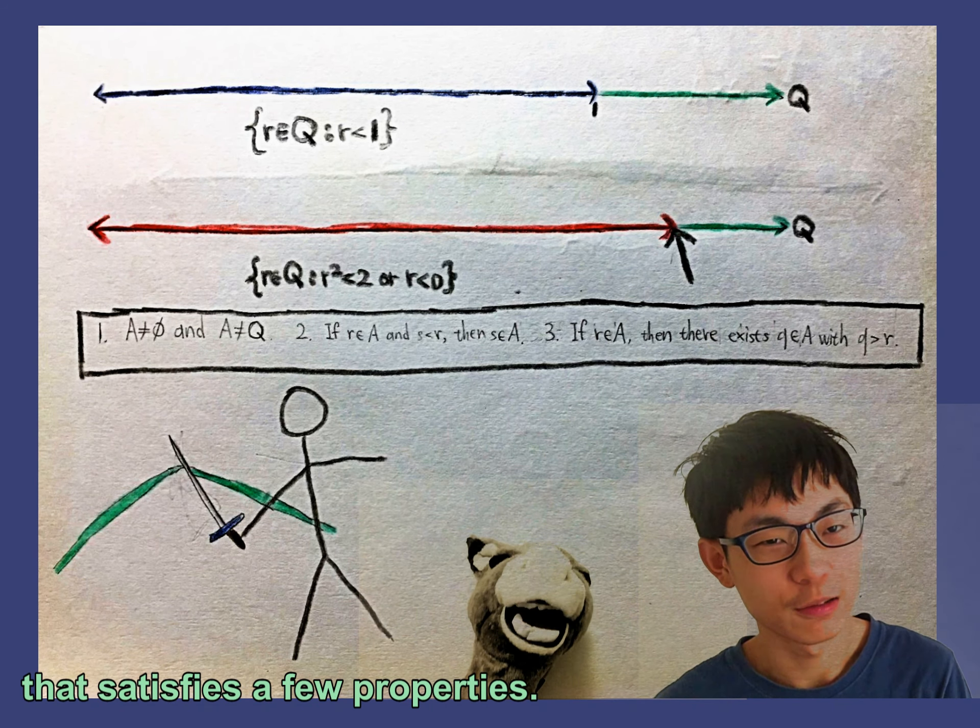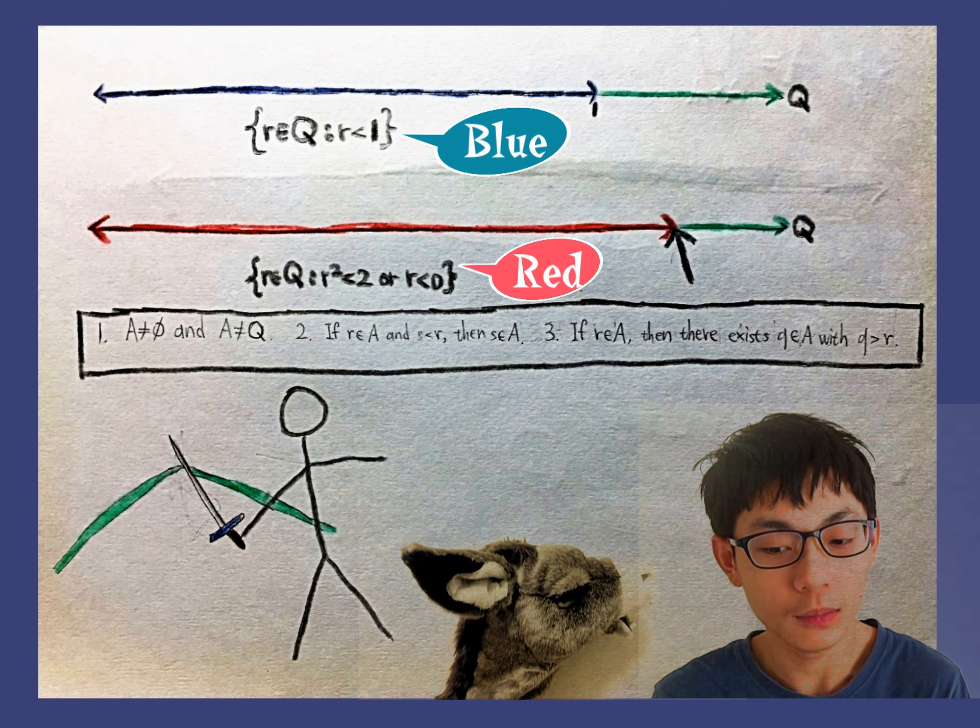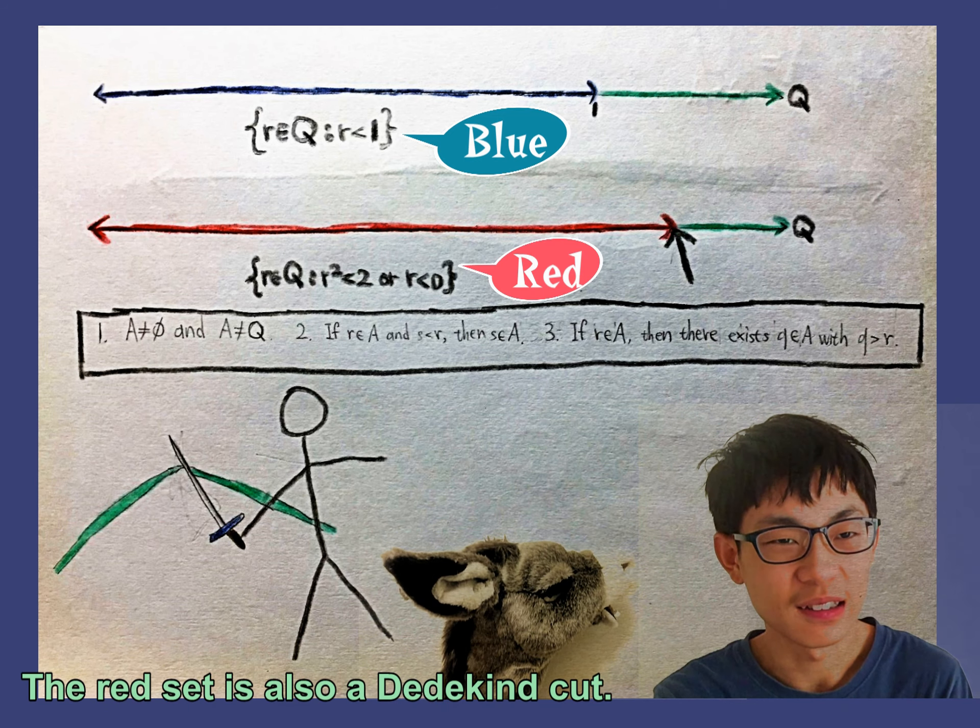For example, the blue set is a Dedekind cut. It contains all of the rational numbers less than 1. The red set is also a Dedekind cut, but there is no rational number at the end of it.